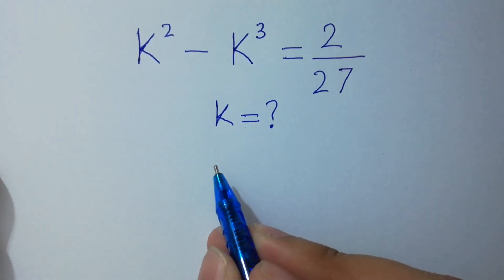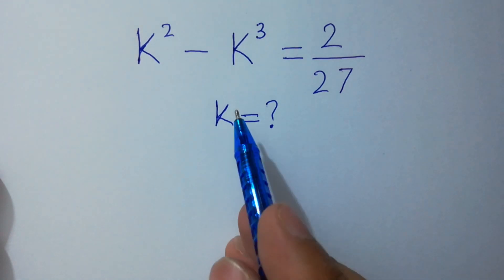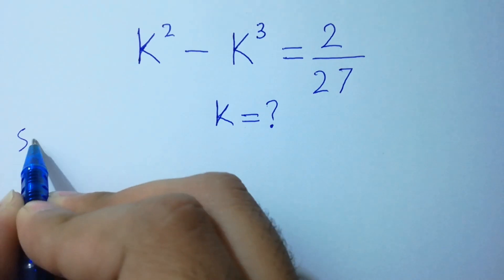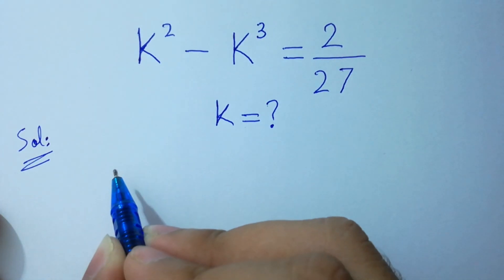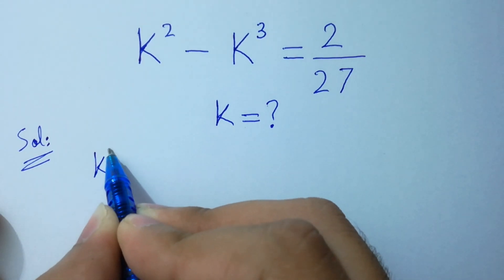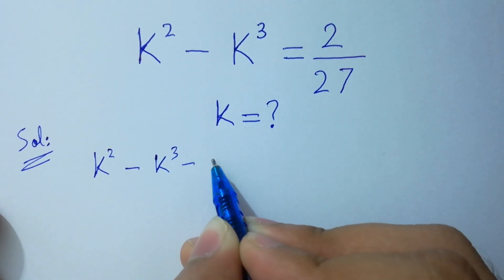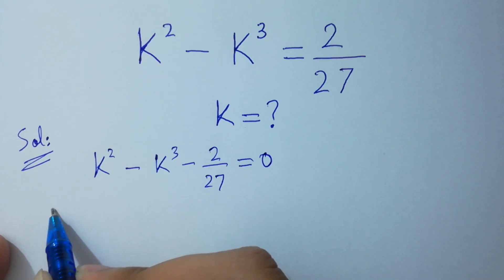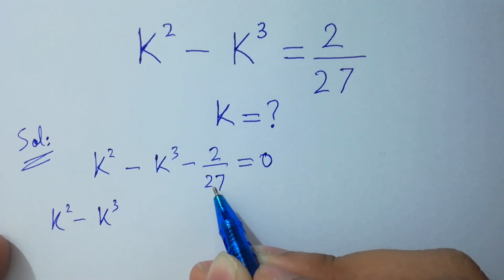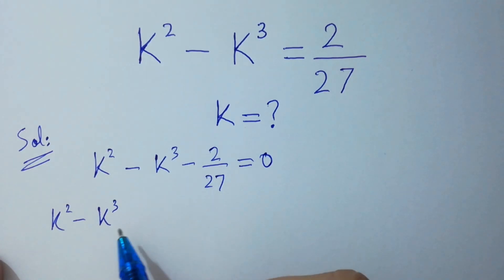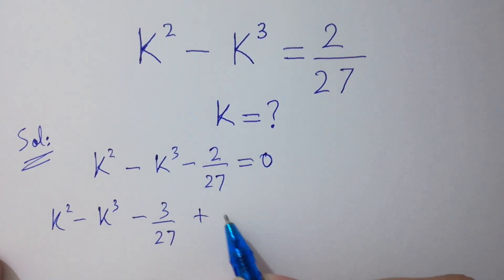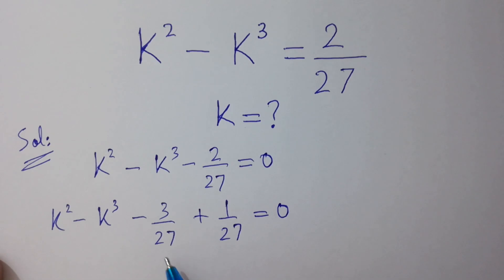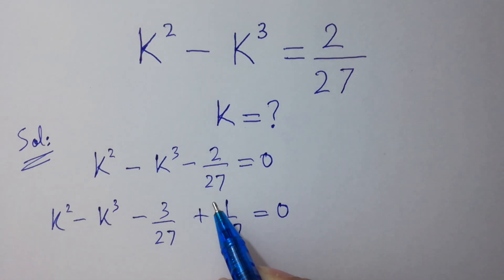Hello friends. Find the value of k if k squared minus k cubed equals 2 over 27. Let's solve it. It will be equal to k squared minus k cubed minus 2 over 27 equal to 0. So, k squared minus k cubed minus 2 over 27 is the same as minus 3 over 27 plus 1 over 27 equal to 0, because 1 over 27 is common and minus 3 plus 1 equals minus 2.